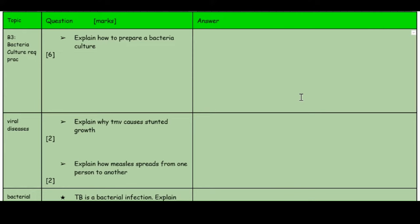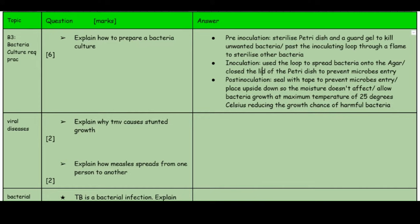Let's begin with bacteria culture required practical. This is a required practical, so I've formulated it as a six-marker: explain how to prepare a bacteria culture. You need to know everything about this practical. There are three stages: pre-inoculation, inoculation, and post-inoculation. Pre-inoculation: you need to sterilize your petri dish and agar gel to kill any unwanted bacteria.